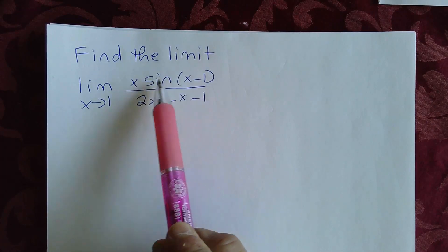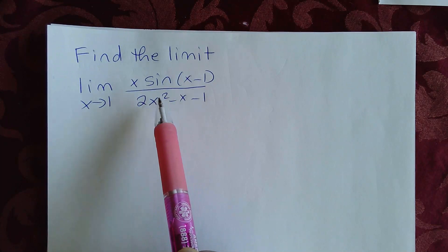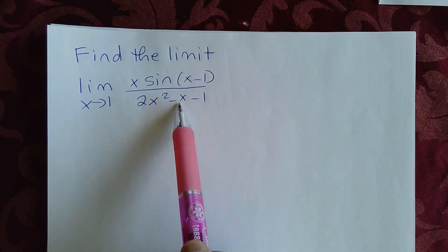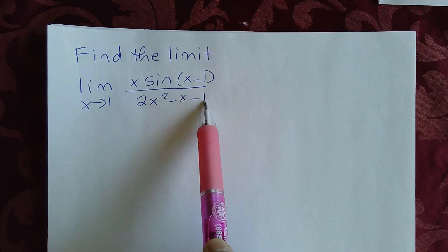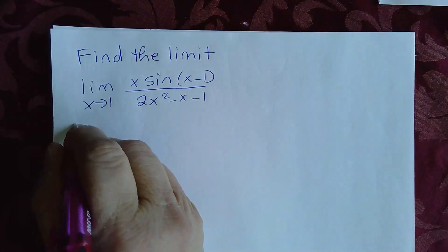Divided by 2 times 1 is 2, 2 minus 1 is 1, 1 minus 1 is 0. So you're going to have an indeterminate form of 0 over 0.